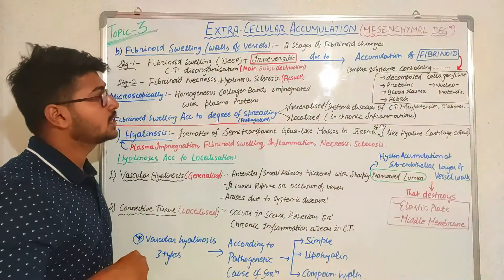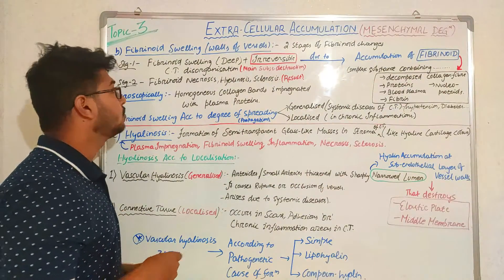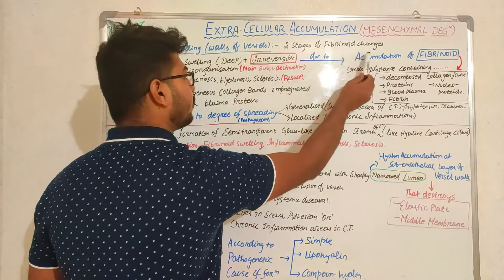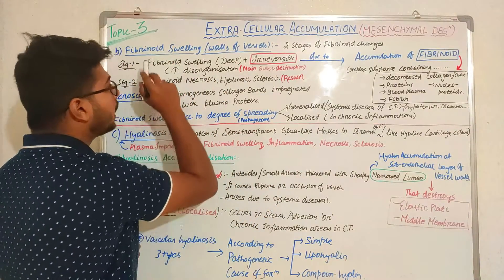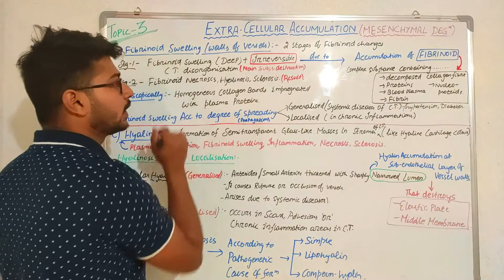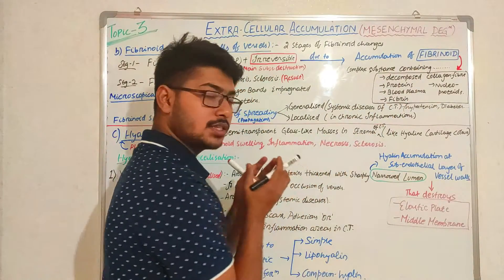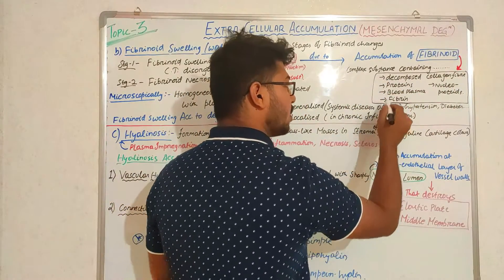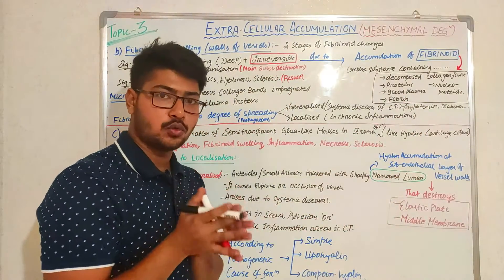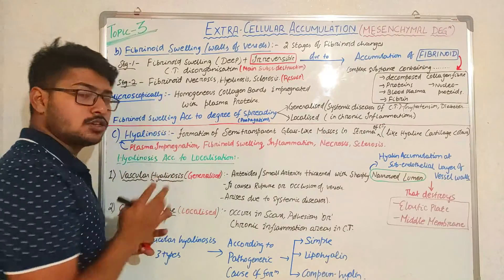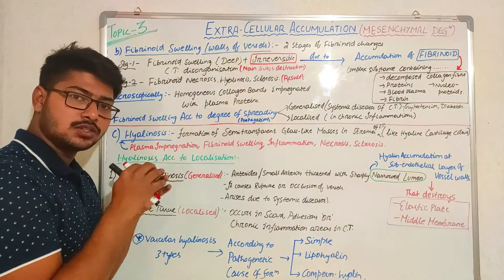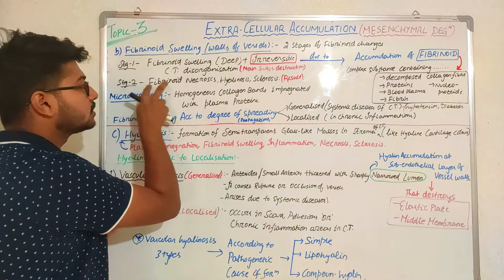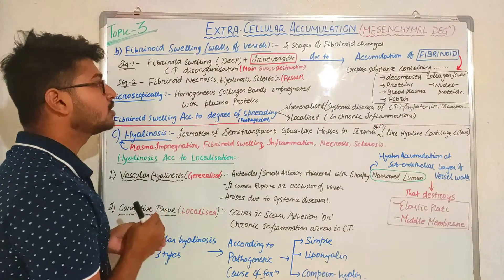The next type of protein extracellular accumulation is fibrinoid swelling in the walls of vessels. Fibrinoid is a complex substance containing decomposed collagen fibers, proteins, blood plasma fibrins, and nuclear proteins. It consists of two stages: first, accumulation of fibrinoid causing fibrinoid swelling, and second, fibrinoid necrosis causing the death of the cell.